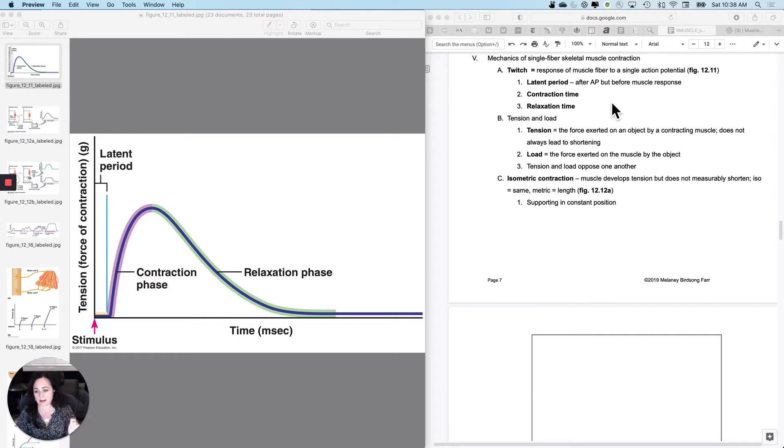And of course, that may not be adequate to start whole muscle contraction or to even make something move visibly. So the response of one muscle fiber to a single action potential on that muscle fiber. And it's got three portions to it.